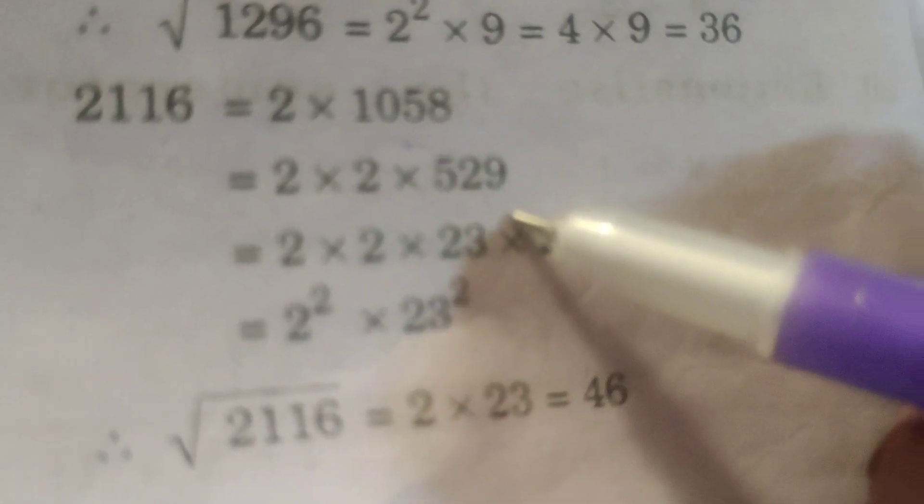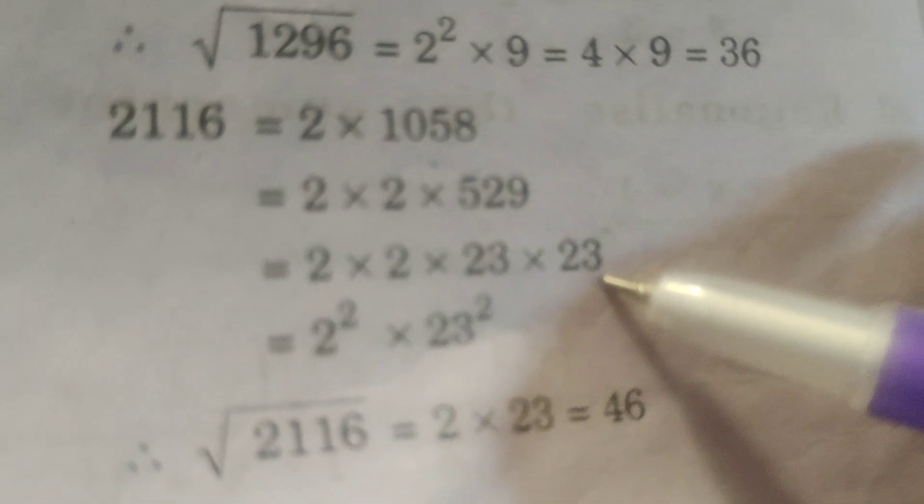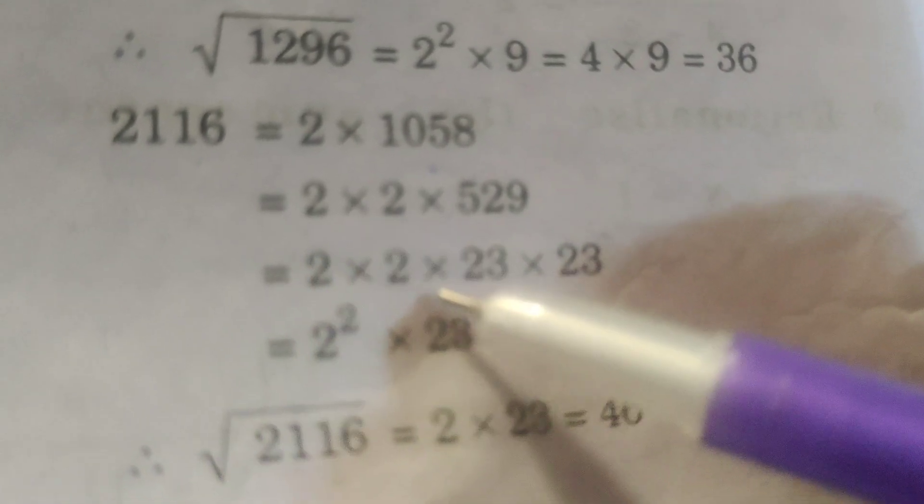Again, 529 equals 23 into 23. So we have 2 into 2 into 23 into 23.